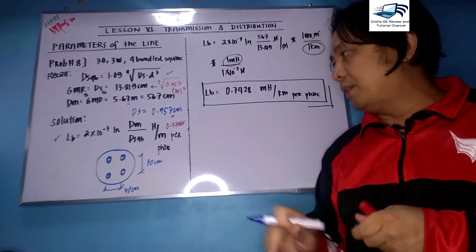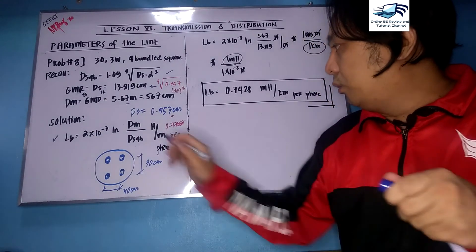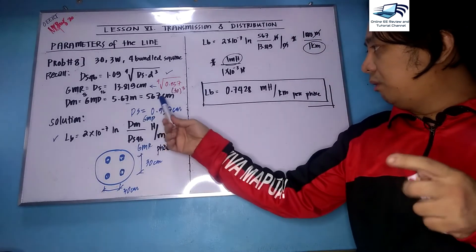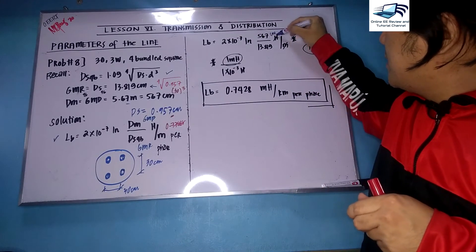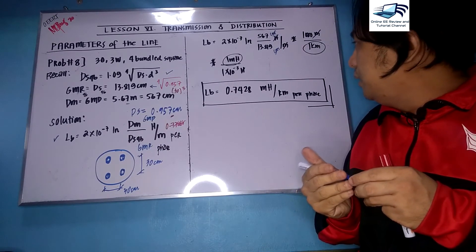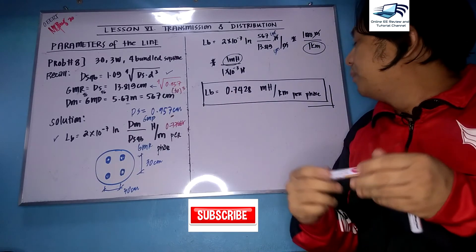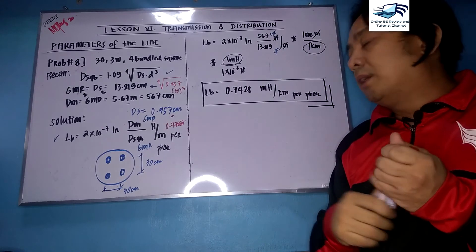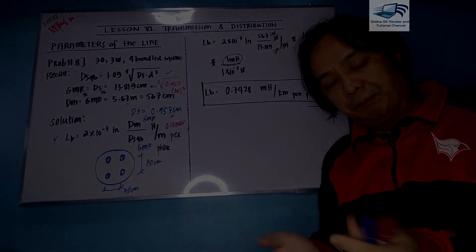We can now solve for inductance of the bundle configuration using the classical formula: L equals 2 times 10⁻⁷ times ln(Dm / DS) henry per meter per phase. Substituting: 2 × 10⁻⁷ times ln(567 / 13.819) — the centimeter units cancel out. Converting to millihenry per kilometer by multiplying by 1000 meters per kilometer and 1 millihenry per 10⁻³ henry, the result is 0.7428 millihenry per kilometer per phase.